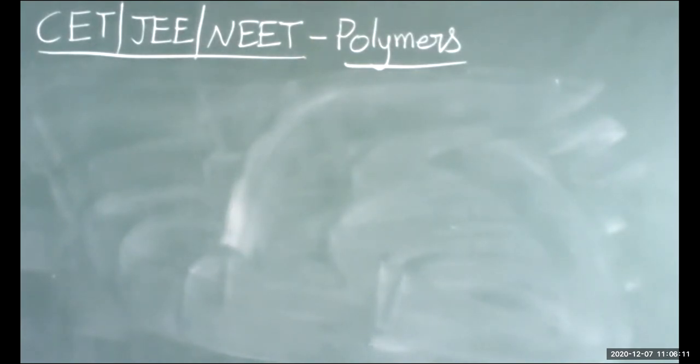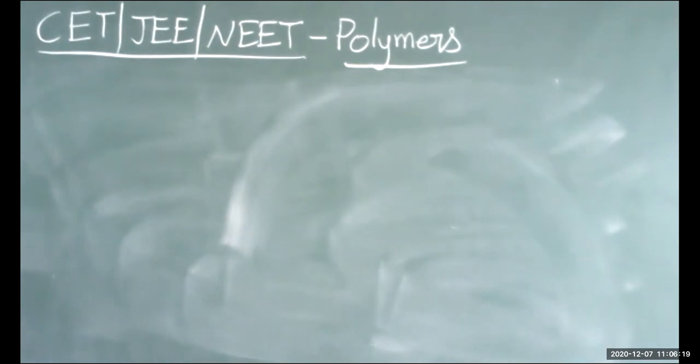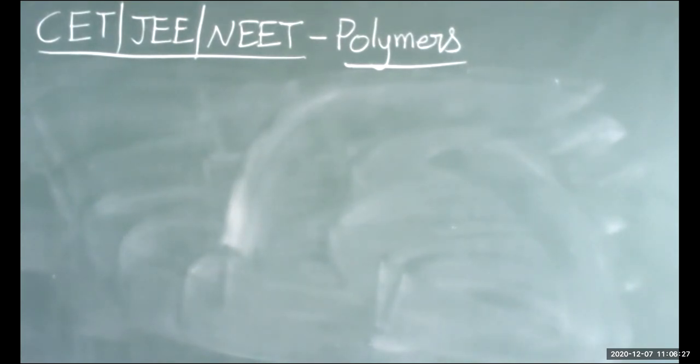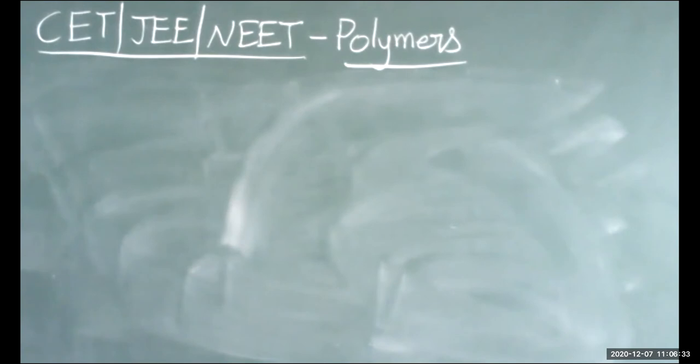Next, question number 8 on page 141: which of the following statements about terylene are correct? Terylene is a polymer — consider whether it is a polyester or polyamide.